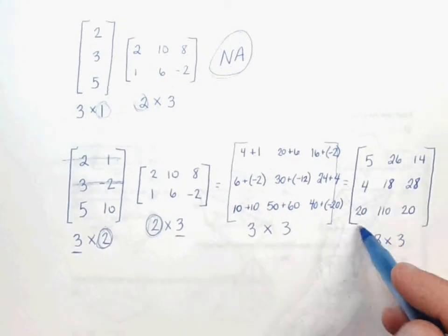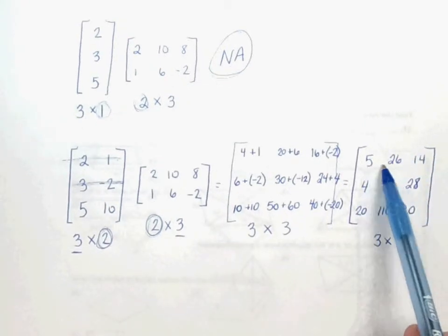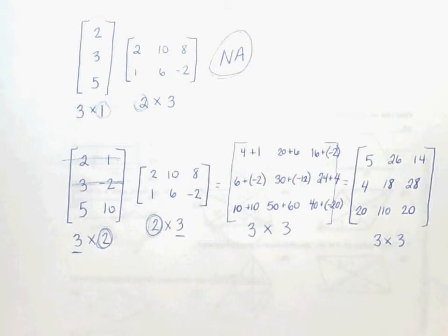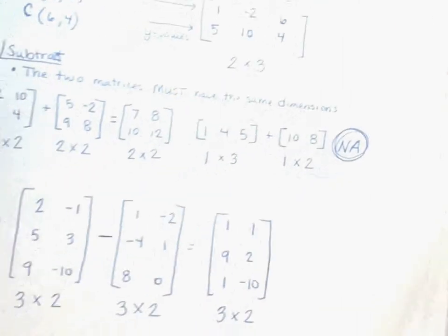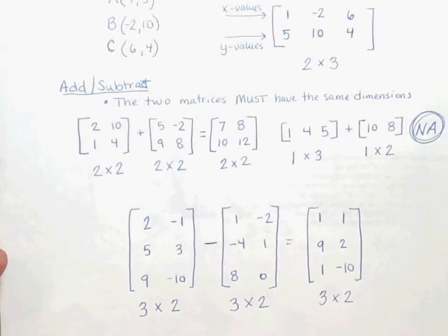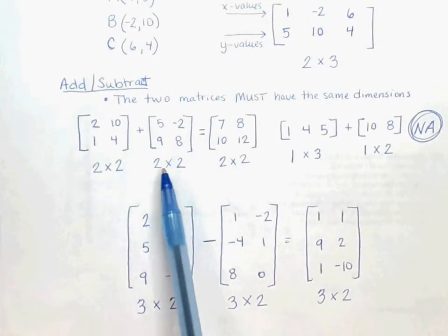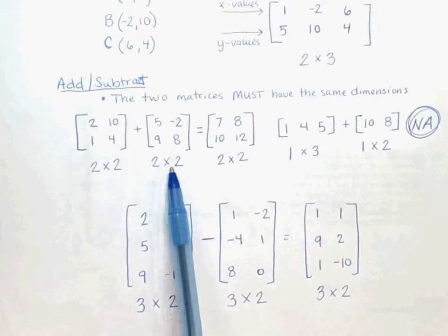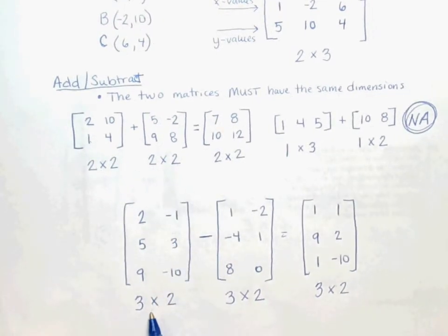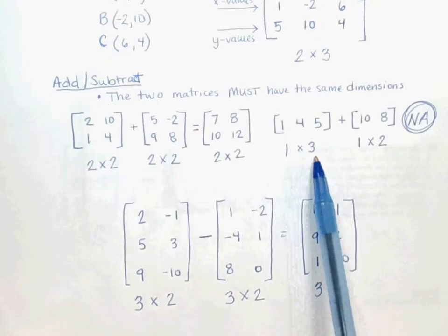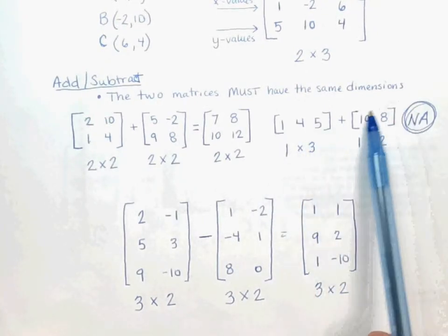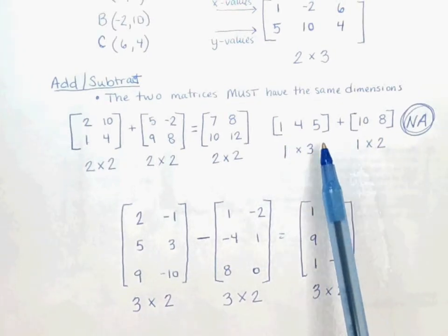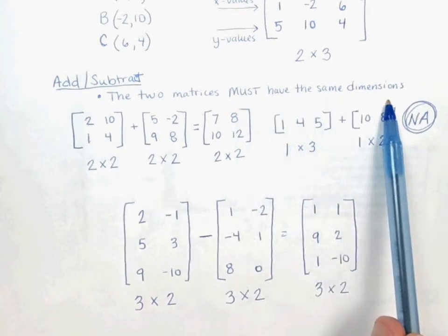So this would be our answer matrix. It's a 3 by 3. So in order to add or subtract matrices, the matrices must have the same dimensions. This was a 2 by 2 and this was a 2 by 2. This was a 3 by 2 and this was a 3 by 2. Here, this was a 1 by 3 and this was a 1 by 2. So we could not add those together because they must have the same dimensions.